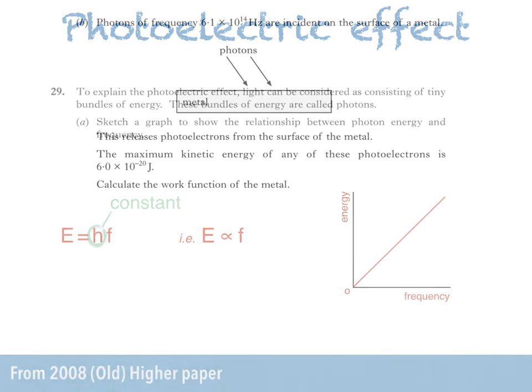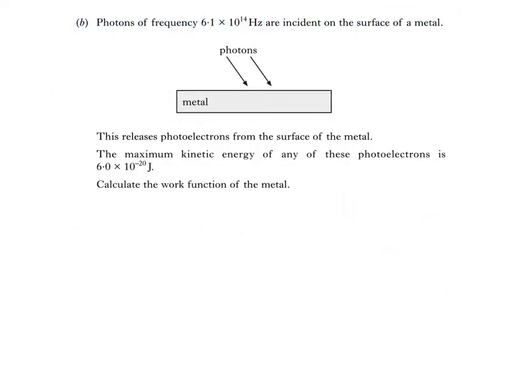Part B says photons of frequency 6.1 times 10 to the 14 hertz are incident on the surface of a metal. This releases photoelectrons from the surface of the metal. The maximum kinetic energy of any of these photoelectrons is 6.0 times 10 to the negative 20 joules. We're then asked to calculate the work function of the metal.